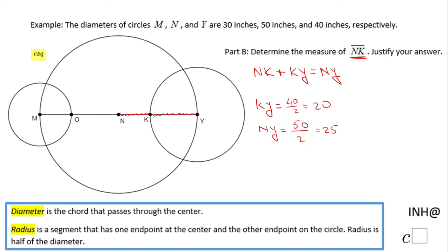So now we're going to plug them back in the relation I put here. NK is the segment we need to find out how long it is, plus KY which is 20, equals NY which is 25. We're going to subtract 20 on both sides, and we have NK equals 5. And that's it.